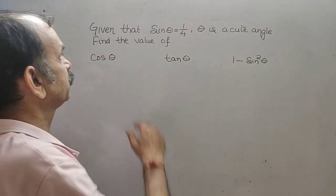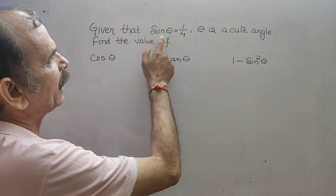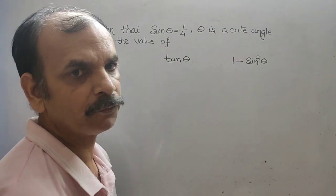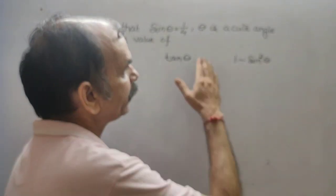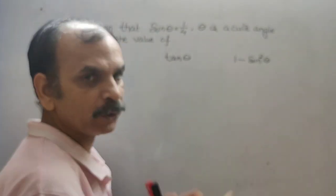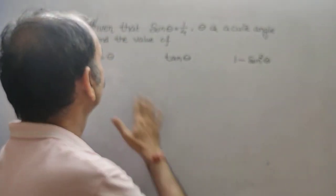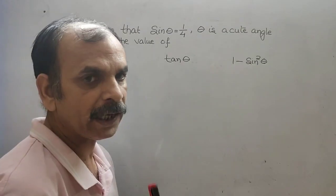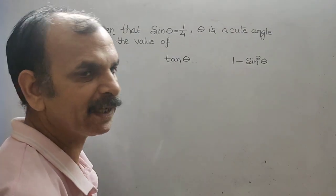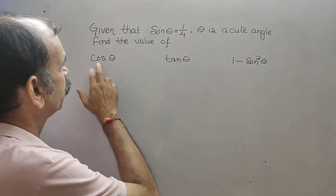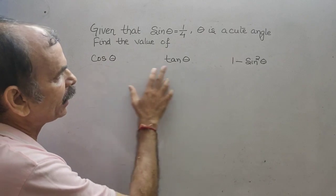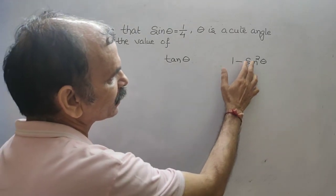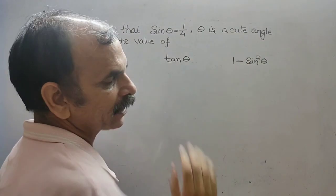Your question is: given that sin theta is equal to 1 by 4, and theta is an acute angle, find the value of cos theta, tan theta, and 1 minus sin square theta.